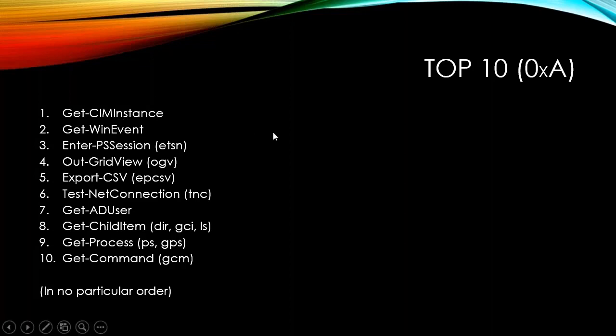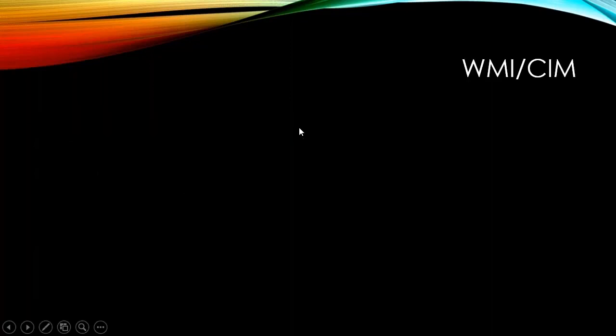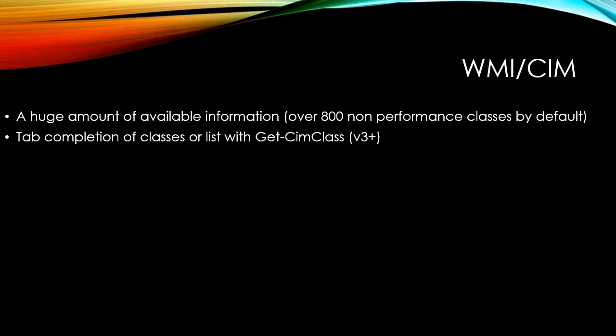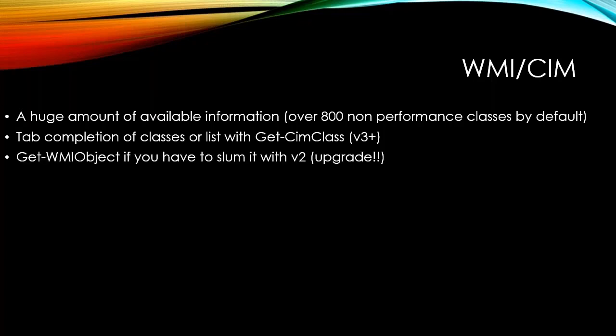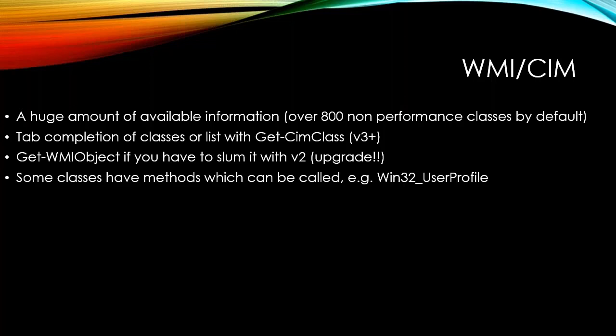First: WMI or CIM, as it's known from PowerShell version 3 onwards — the Common Information Model, but don't call it 'Kim'. CIM is a standard, not just a Microsoft one, for getting information from systems. There are over 800 built-in classes by default, and vendors can add their own. We can start tab-completing class names to see what's available without Googling anything. You can do get-CimClass, and if you only have version 2, use get-WMIObject — it's not massively different; same classes.